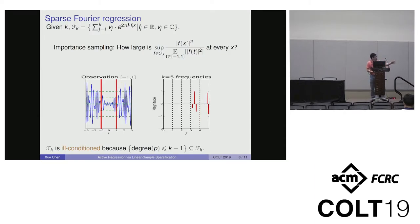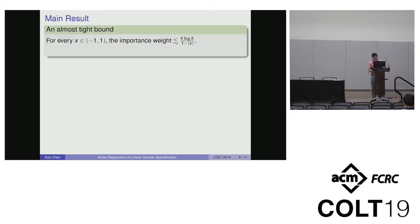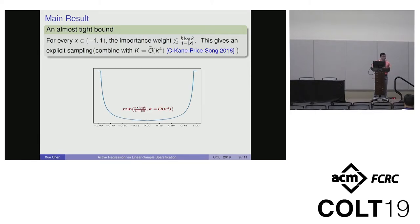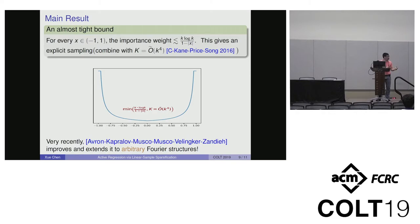A few remarks. First, this family is not linear because we allow arbitrary real frequencies. Second, this family is ill-conditioned because degree k-1 polynomials are in this family. Our main result is a simple but almost tight bound showing that for every point x, the importance weight is k log k over (1 - |x|). This suggests an explicit distribution for sparse Fourier transform over a fixed interval. The curve is essentially 1/(1-|x|), but we need to round the corner using the condition number. Very recently, Avron, Khabrov, Masku, Velingker, and Zandieh improved and extended this to arbitrary Fourier structures, not necessarily sparse.